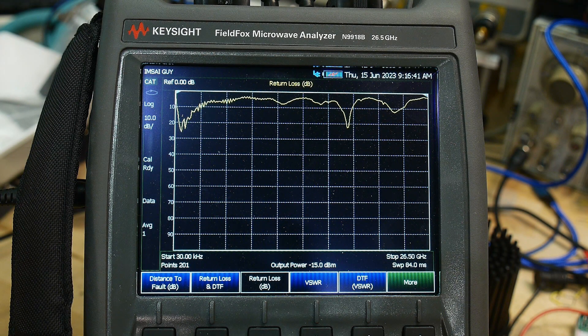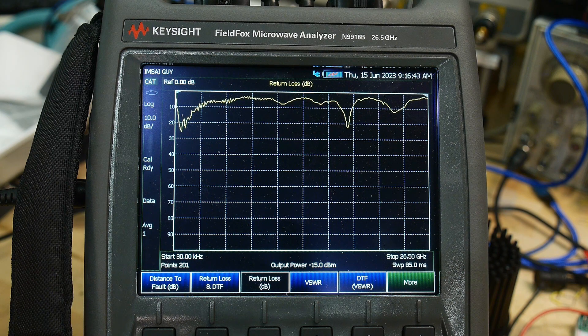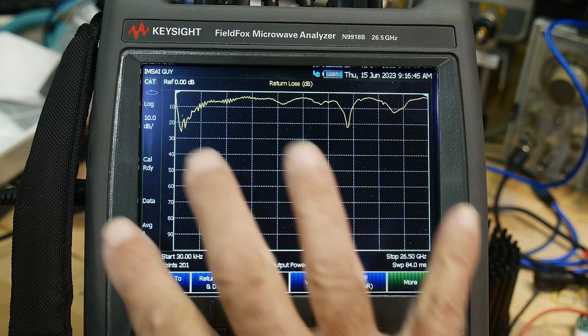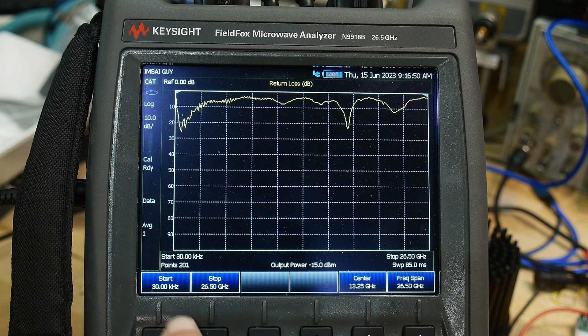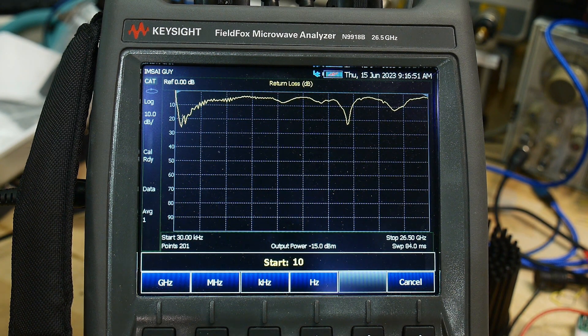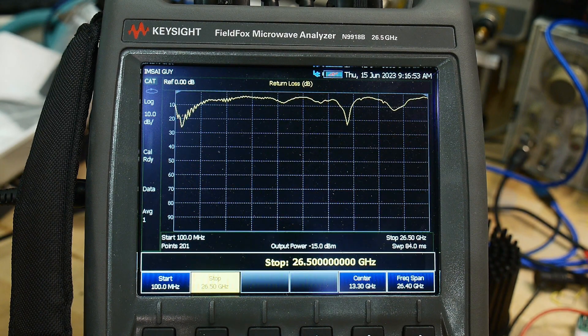So we're going to be taking a look at an antenna today. It's up on the roof. It's my two-meter J-pole antenna. We're going to be taking a look at the return loss. So let me change the frequency here. We'll start it at 100 megahertz and we'll stop it at 200 megahertz.